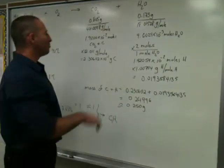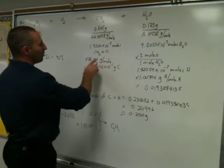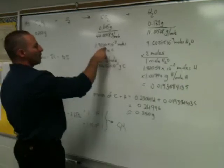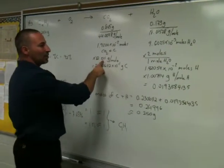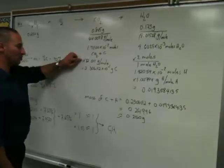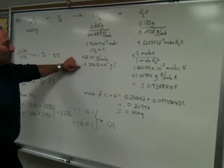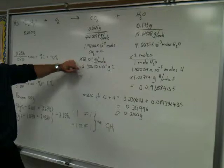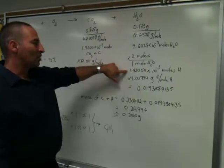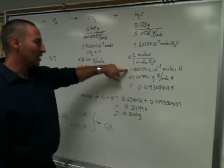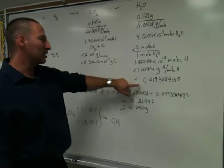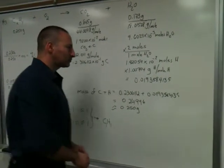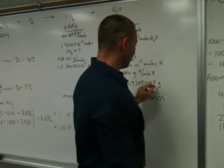Then I take the two mole quantities and I convert them into gram quantities. So to convert moles of carbon into grams of carbon, I multiply by the molar mass of carbon, which is 12.011. And I get 2.306 times 10 to the minus 1 grams of carbon. I multiply this quantity in moles of hydrogen by the molar mass of hydrogen, and I get that many grams of hydrogen.